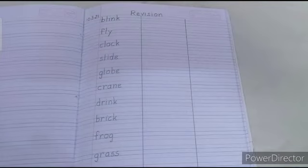Now children, you have to write in both the columns. Children, let's revise all the spellings once again. B-L-I-N-K Blink. F-L-Y Fly. C-L-O-C-K Clock. S-L-I-D-E Slide. G-L-O-B-E Globe. C-R-A-N-E Crane. D-R-I-N-K Drink. B-R-I-C-K Brick. F-R-O-G Frog. G-R-A-S-S Grass.